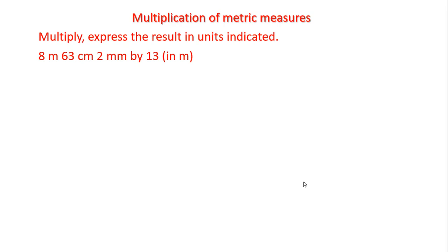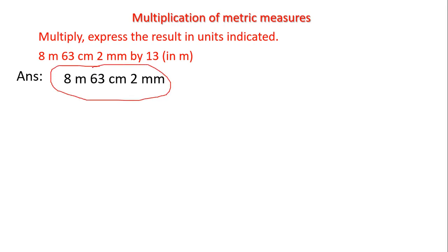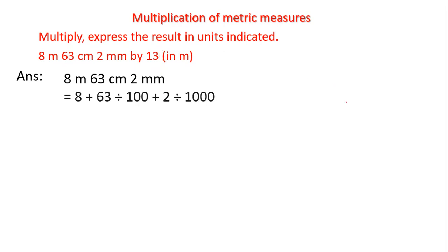First we will write the given measurement as it is: 8 meter 63 centimeter 2 millimeter. Next, we will convert these three units into meters, as we studied in previous videos. The 8 meters is already in meters, so I kept it as it is. Next, this centimeter has to be converted into meters.